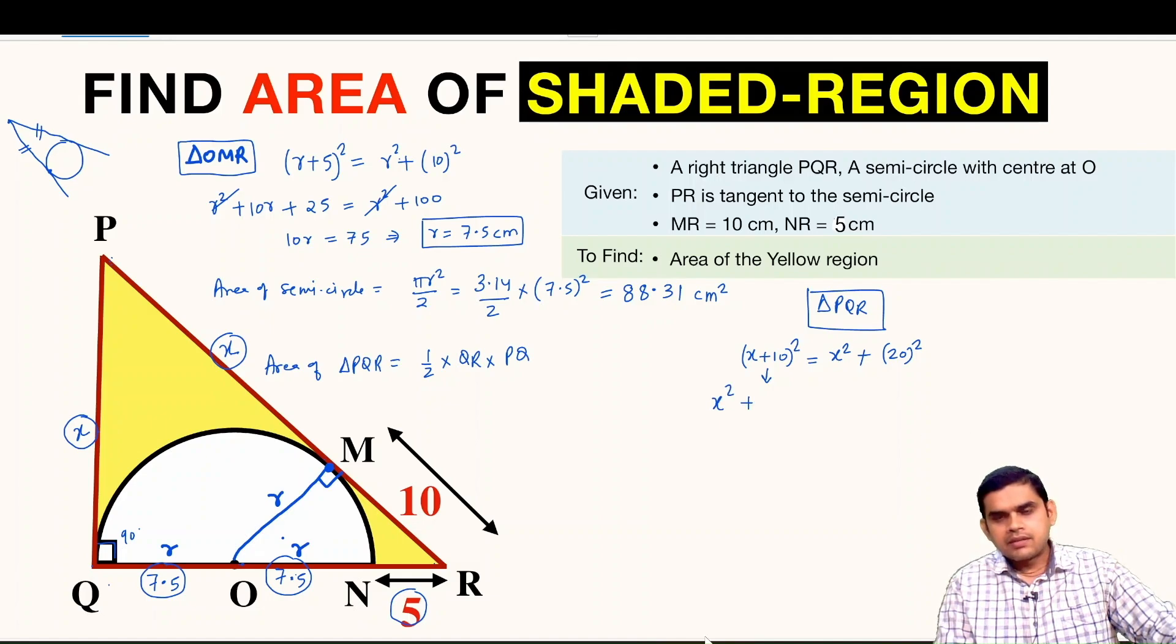x square and x square from both sides gets cancelled. So 20x is equal to, this will be 400 minus 100, 300. So x will be 300 over 20, this gets cancelled.